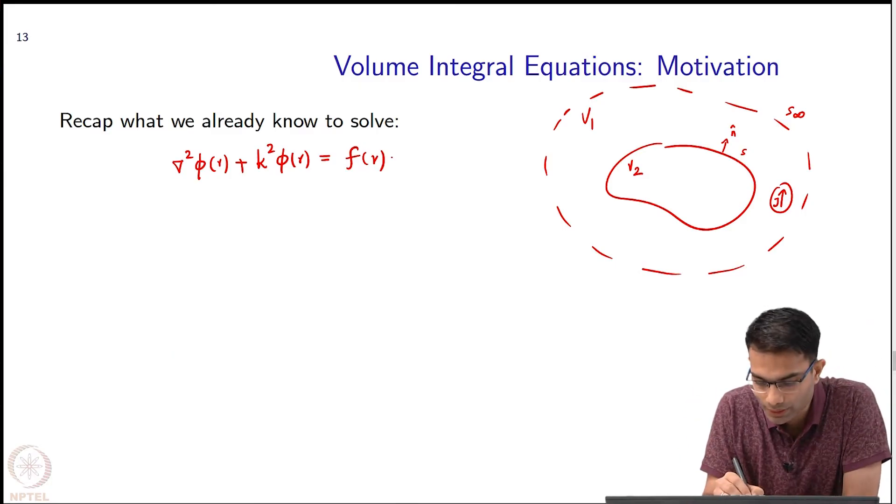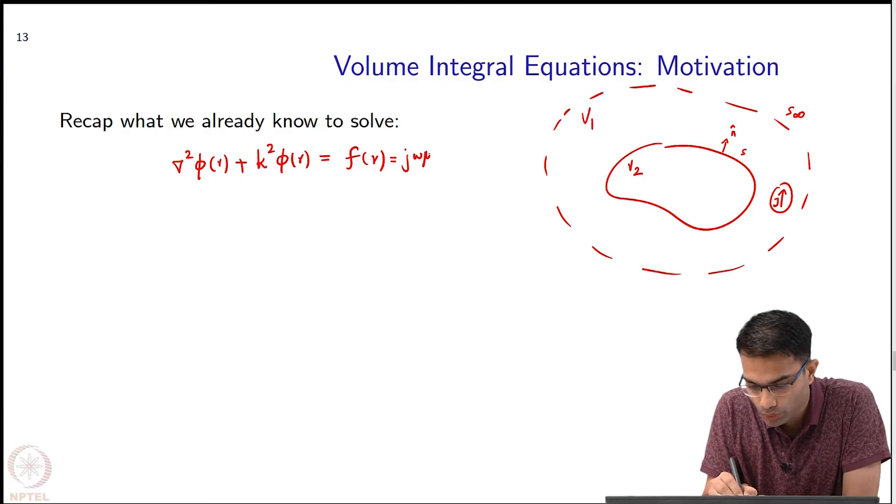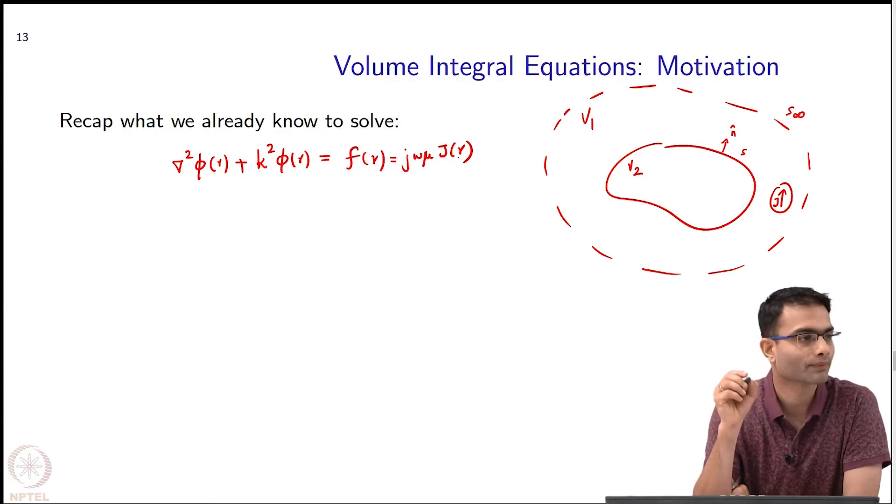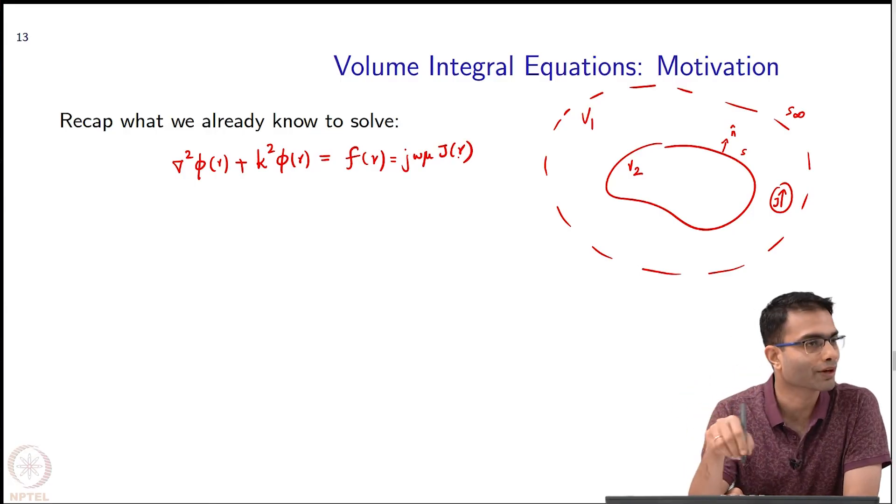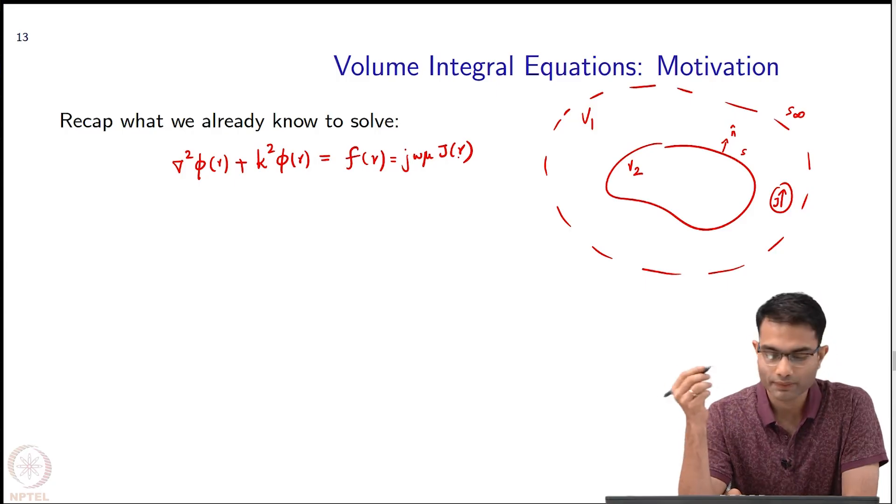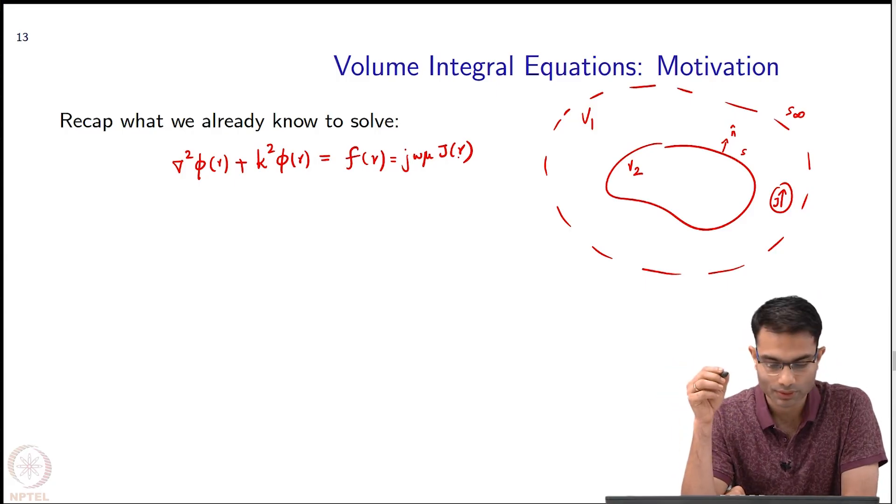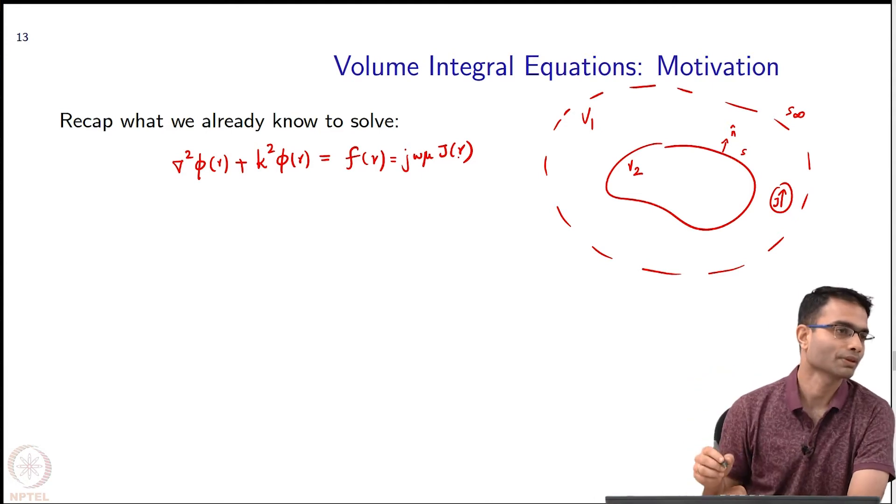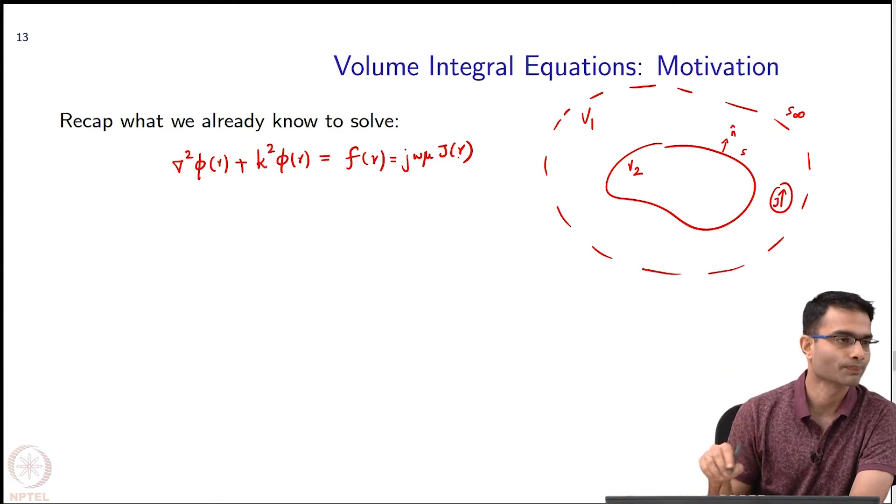There was a current source J over here. In these equations where did the current source find an appearance? Which of the terms contains the current source? F of r. F of r was something like J omega mu J of r. We just absorbed it into F of r.